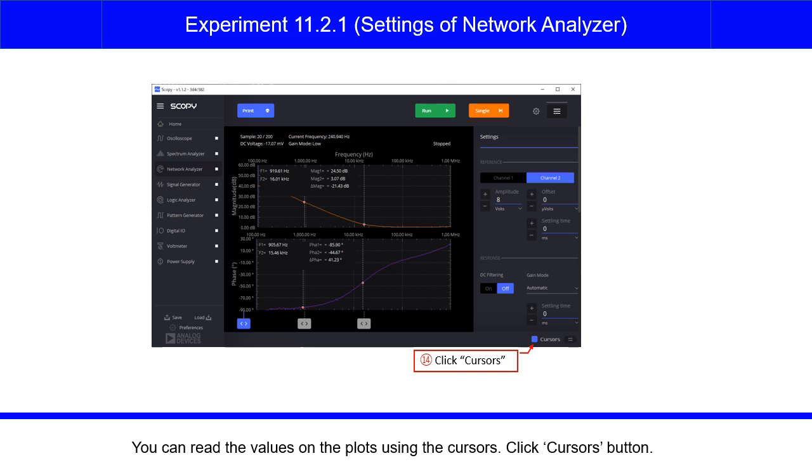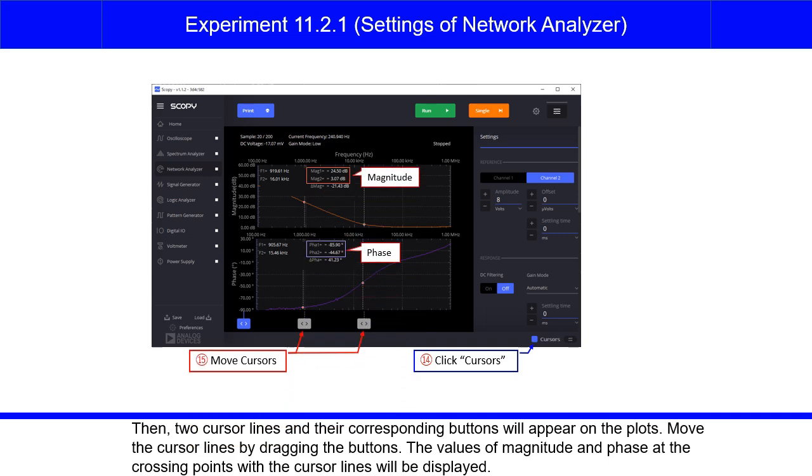You can read the values on the plots using the cursors. Click cursors button. Then, two cursor lines and their corresponding buttons will appear on the plots. Move the cursor lines by dragging the buttons. The values of magnitude and phase at the crossing points with the cursor lines will be displayed.